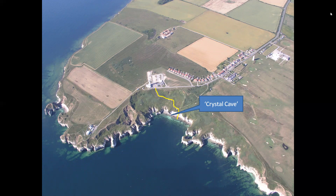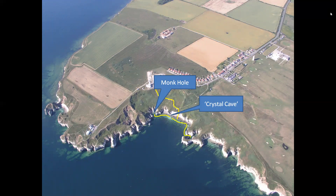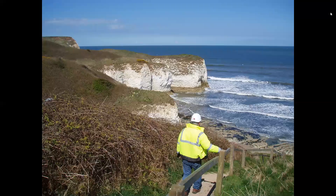From there we'll move into Monk Hole and take a look at the lithostratigraphy in a relatively undisturbed section, before crossing to the north side, noticing more structural and some new sedimentary features in Molk Hole and on Kindle Scar. The steps leading down the cliff from the lighthouse provide opportunities to stop and appreciate many features associated with the results of marine erosion.